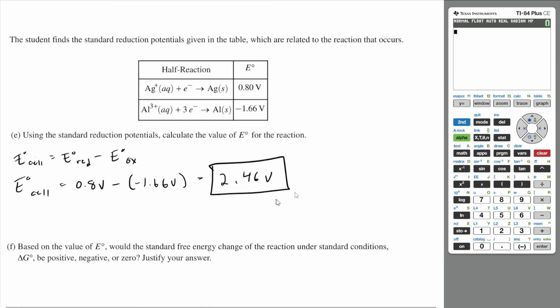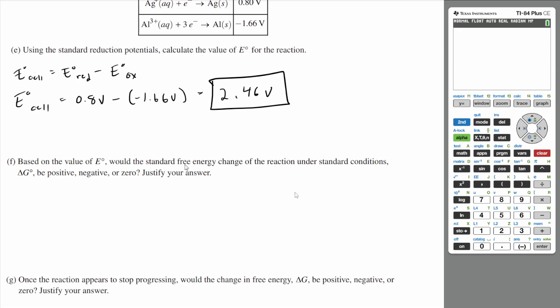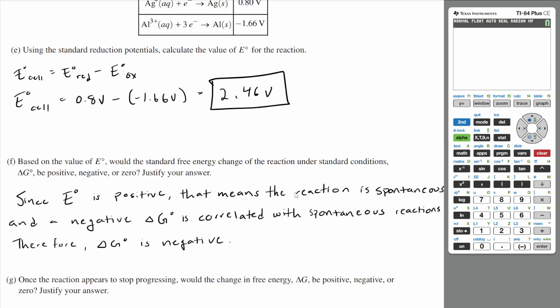All right, let's go on to F. Based on the value of your cell potential, would the standard free energy change of the reaction under standard conditions, delta G, be positive, negative, or zero? Justify your answer. Well, since our value of E° is positive, that means our reaction is going to be spontaneous. And if our reaction is spontaneous, that means our delta G would be a negative value. So since our cell potential is positive, that means spontaneous, and a negative delta G is correlated with a spontaneous reaction. All right, since your cell potential is positive, that means the reaction is spontaneous and a negative free energy is correlated with spontaneous reactions. Therefore, your change in free energy is negative.